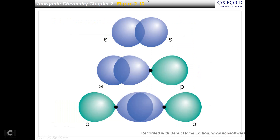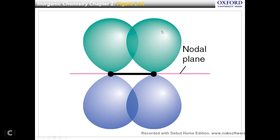Now let's look at some pictures. The SS interaction gives sigma bonding. The SP interaction gives sigma bonding. The PP interaction is also sigma bonding because this is a head-to-head interaction. Now let's look at the shoulder-to-shoulder interaction — imagine two persons standing, and that's their shoulders — that's shoulder-to-shoulder interaction. That gives a pi bond. Although this pi bond is constructive interference, we still observe one nodal plane — a planar nodal surface. This is not due to destructive interference, because there's no destructive interference between these two.